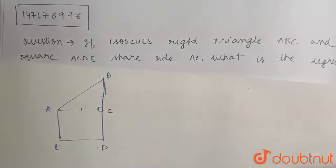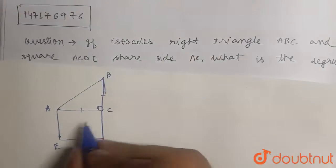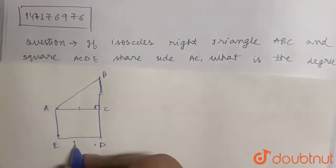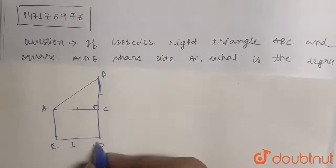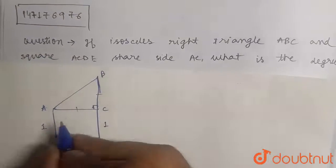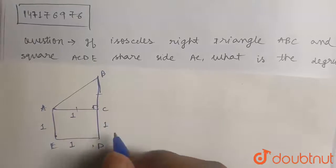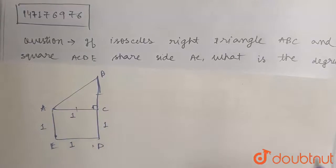Now imagine the square length is of one unit. If ED is one, this is also one, this is also one, this is also one. Clearly, because the length of all the sides of a square are equal.